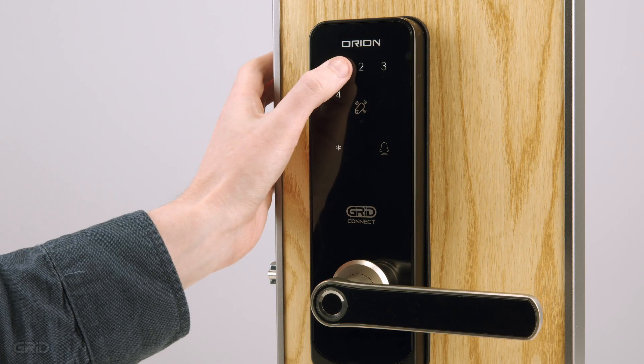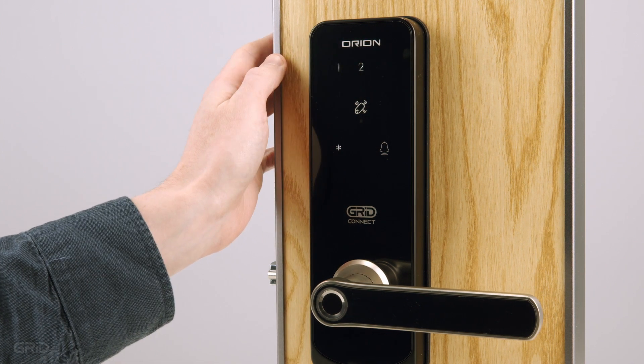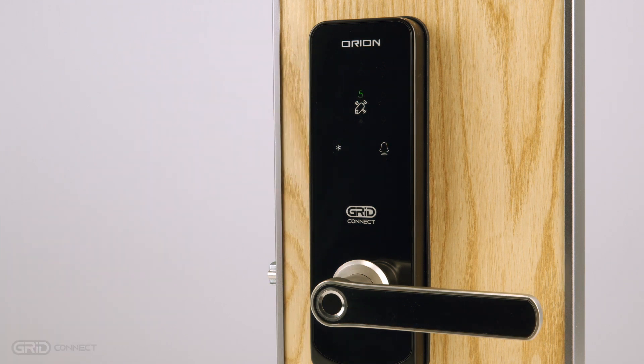To begin pairing, enter the setup menu and select 1 to manage administrators. Then select 3 for network settings. Press 2 to select standard pairing mode. The 5 key will begin to flash indicating the device is ready to pair.